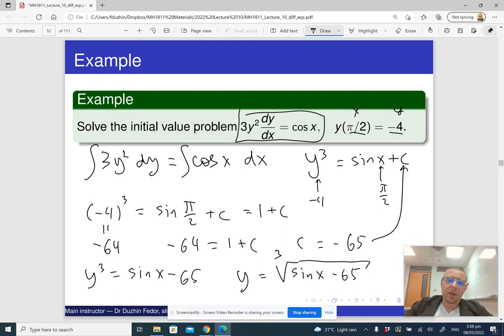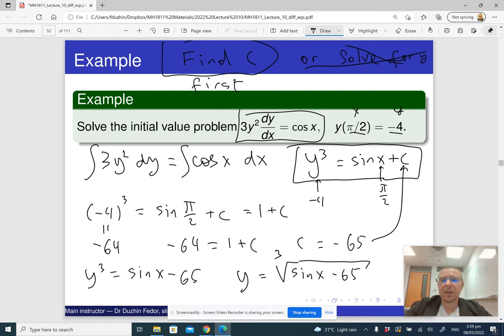Now, notice that instead of finding C right from the start, I could instead, at the stage when I obtained this equation on Y and X, so right after integration, I could first solve for Y. Now, in my experience, it is usually easier to find C first. So, I mean, if you have a choice, like either find C or solve for Y, what you do is, you find C first. It's just easier. So, I mean, practice shows that sometimes it doesn't matter. So, it is never really easier to solve for Y. Sometimes it doesn't matter.